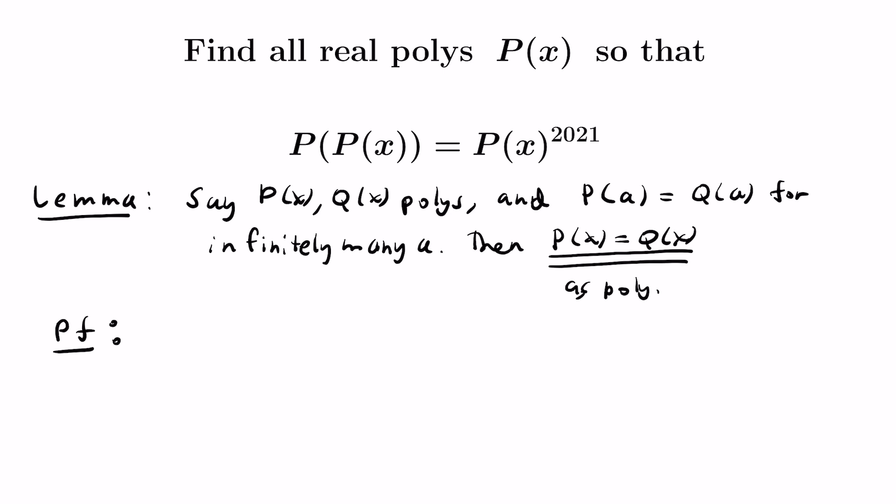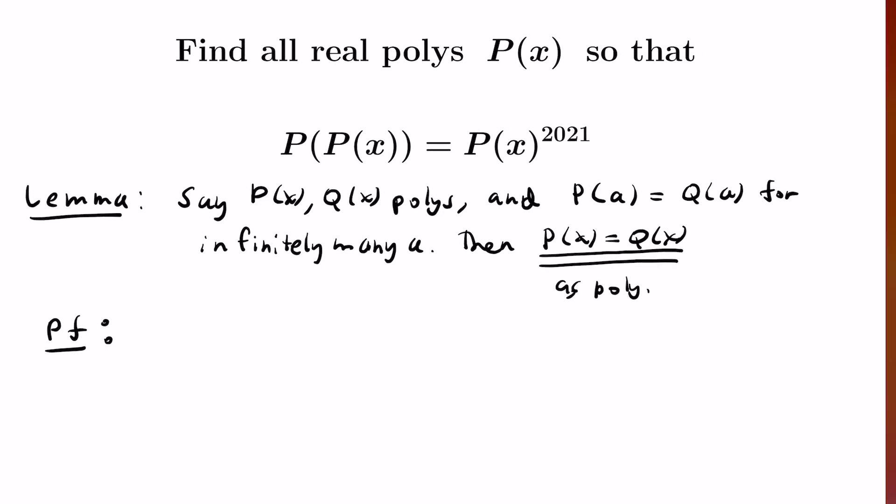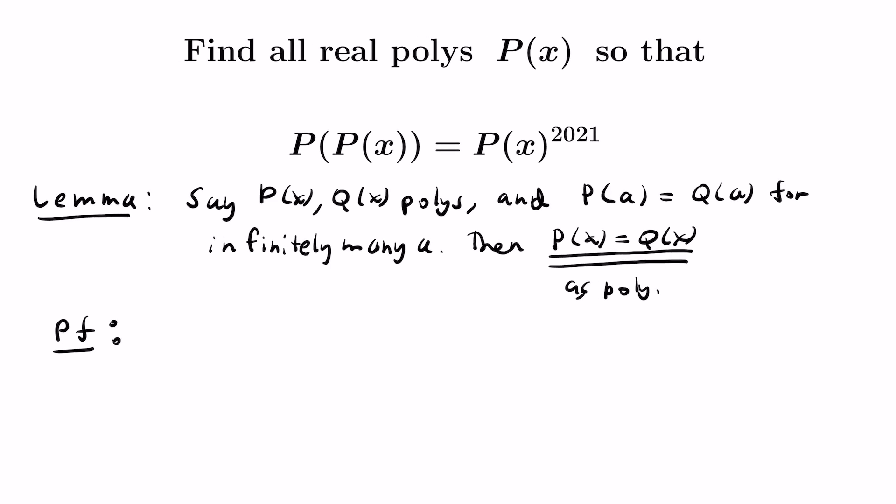The proof of this relies on the following fact. If you have a polynomial that has infinitely many roots, then it can only be the zero polynomial. The reason why is because if you have a polynomial of degree n, then it can only have at most n roots. And so the polynomial would have to be constant if it had infinitely many roots. Now, the zero polynomial is the only constant polynomial that has roots. Every other constant polynomial doesn't have roots at all.